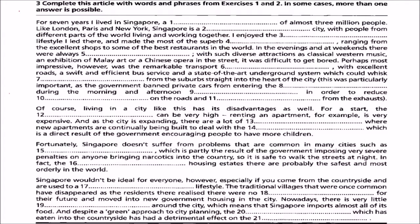Now we have seen tasks one and two with words and phrases we need to fill in. Let's start. For seven years I lived in Singapore, a metropolis of almost three million people. Like London, Paris, and New York, Singapore is a cosmopolitan city with people from different parts of the world living and working together.